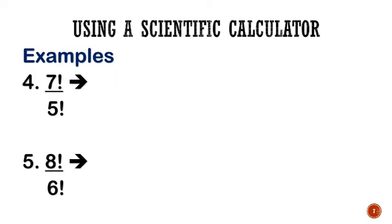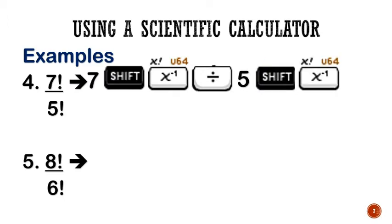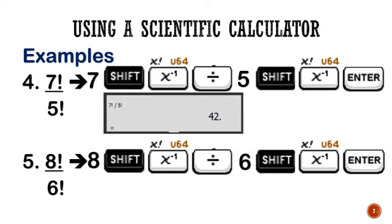For calculator, we will have 7, shift, then factorial, divided by 5, shift factorial, then do not forget the enter or equal sign. If you don't press it, what will appear on the calculator is just the last answer, which is the 5 factorial. That's not what you need. You want the quotient of 7 factorial and 5 factorial. So do not forget to press enter or in some cases, equal sign, and it will result to 42. Next, that will be 8, shift, factorial, divided by 6, shift, factorial, then enter.